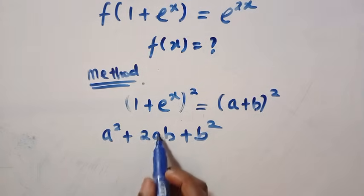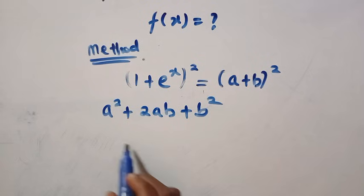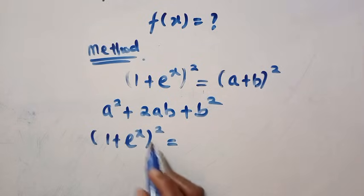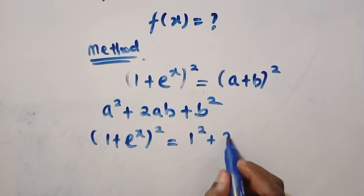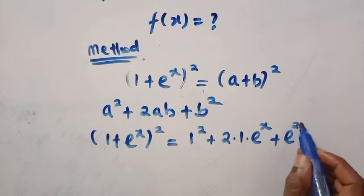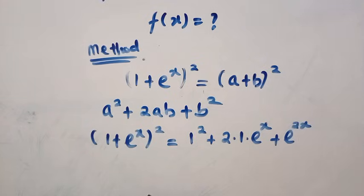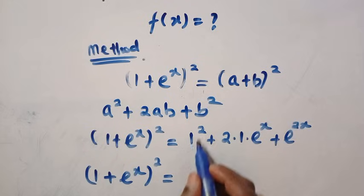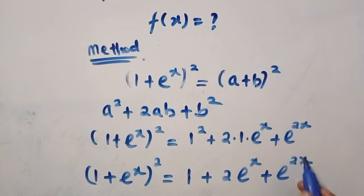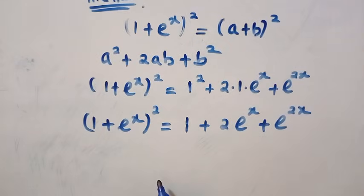If a is 1 and b is exponential x, then we have 1 plus e to the power of x, all raised to the power of 2, equals 1 squared plus 2 times 1 times e to the power of x, plus e raised to the power of 2x. This means 1 plus e to the power of x squared equals 1 plus 2 e to the power of x plus e to the power of 2x. Now I'm trying to do some manipulation here — we have e to the power of 2x.